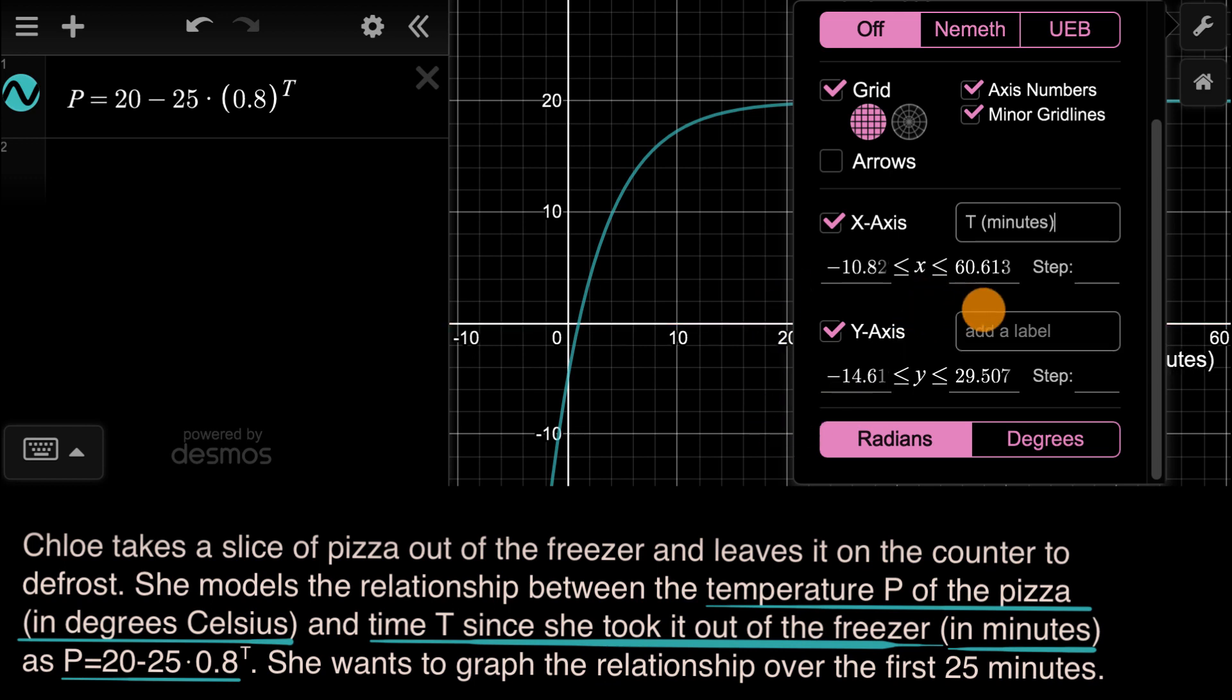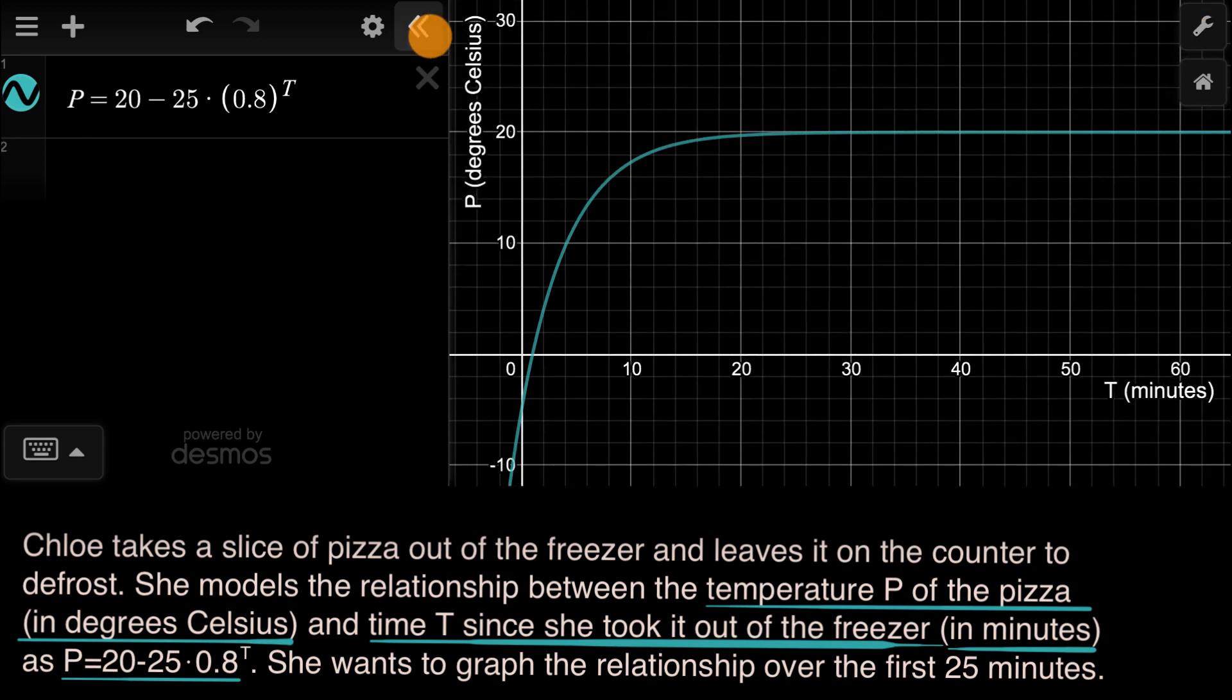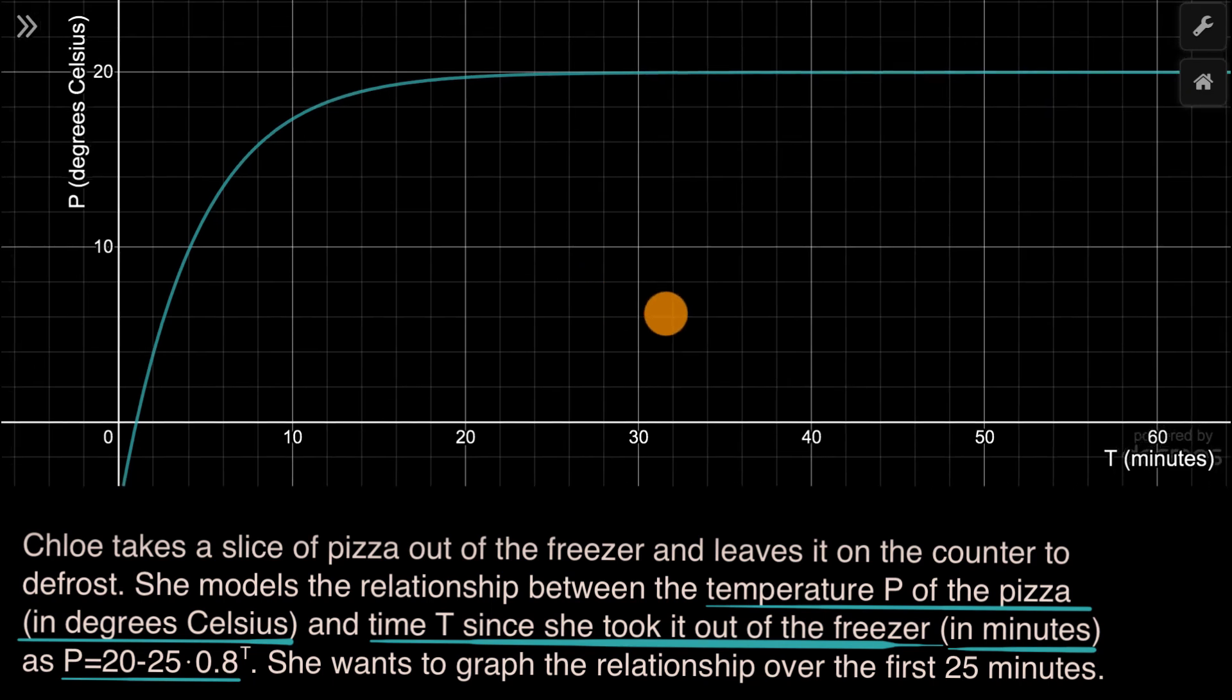And then what about our Y axis? Well, this is really our P axis, and that's measuring degrees Celsius. So that's our P axis measuring degrees Celsius. So let's just look at what our graph looks like so far. We've put in our axes, and we have already typed this part in, so I can focus on the graph itself.